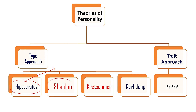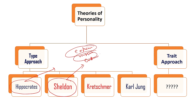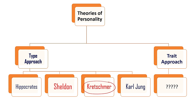The second one is Sheldon — you have studied this in BPA. Sheldon's classifications are Ectomorph, Mesomorph, and Endomorph. Just by looking at physical appearance, you can tell whether they are sociable or energetic. Kretschmer also gave a classification following the type approach.